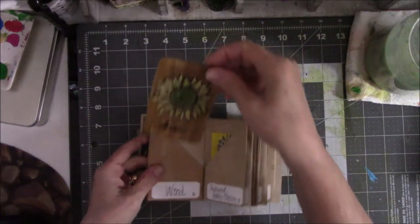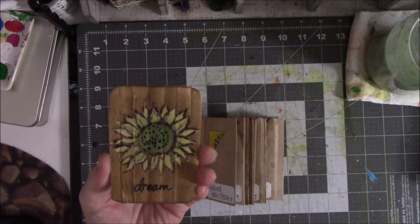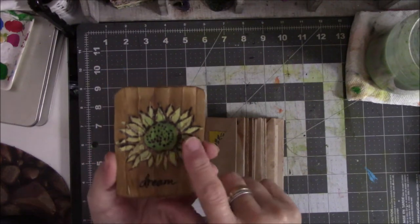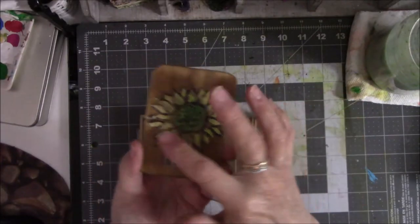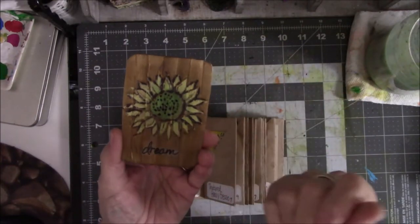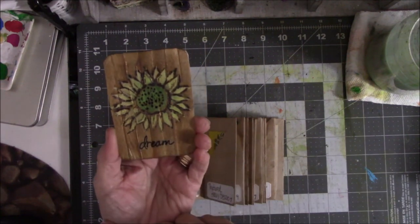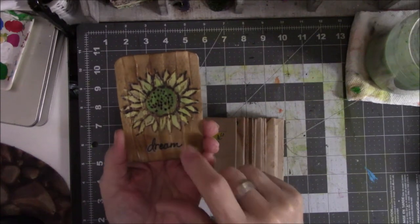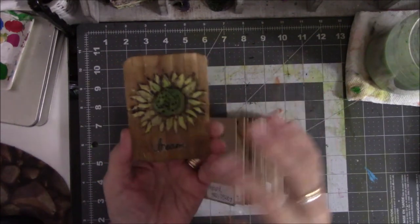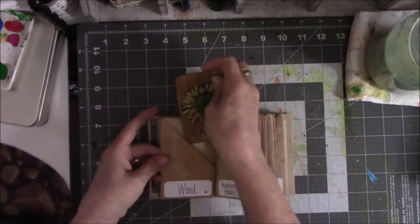This is wood. I did a video on this. These are popsicle sticks and I used the wood burner to burn the sunflower on there. This is just a clear sticker. That was a challenge to do the wood burning thing. I'm not very good at it but it was enough. I used the Tim Holtz walnut stain for the background.